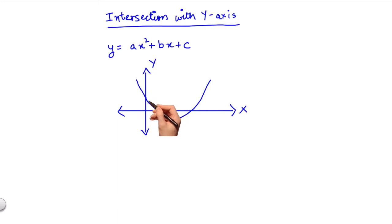It intersects the y-axis at one point, and since all points on the y-axis have their x coordinate zero, I can represent the coordinates for this point as zero comma mu.